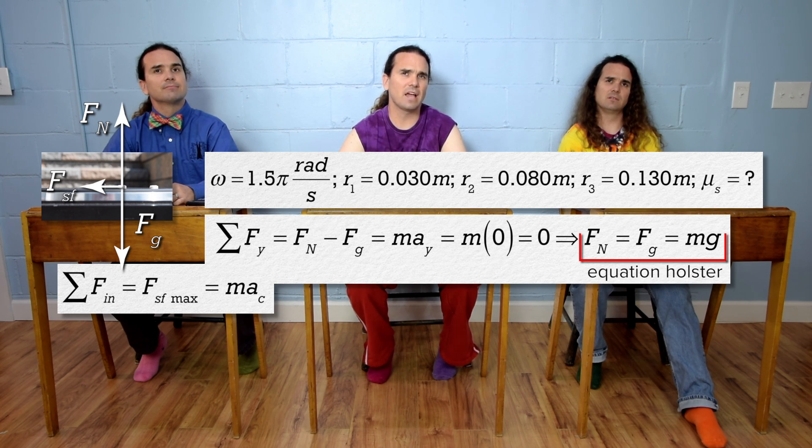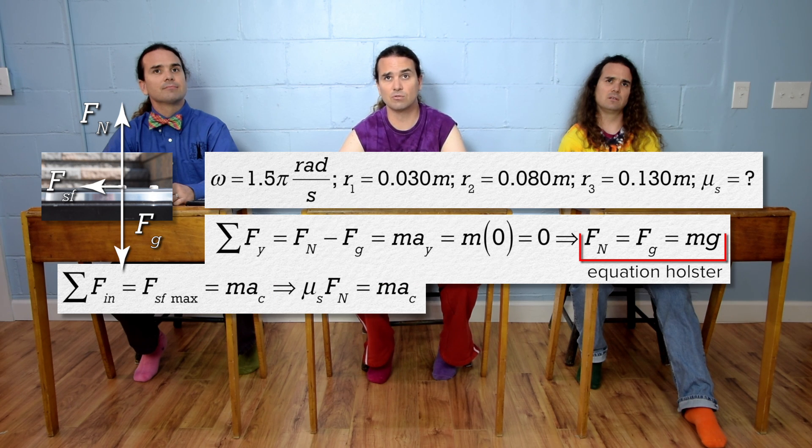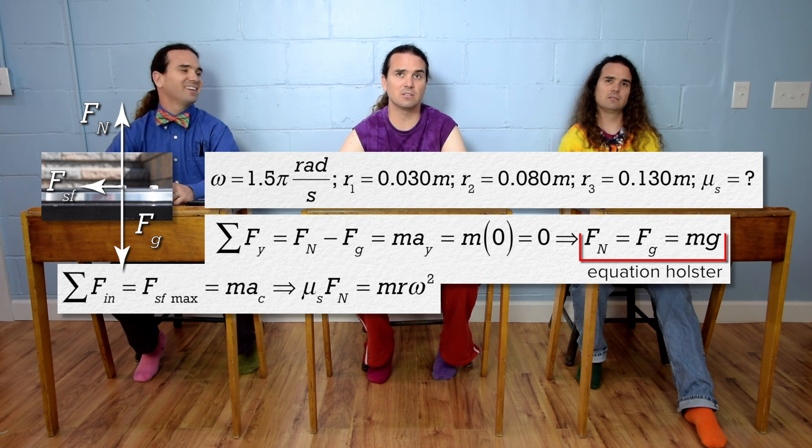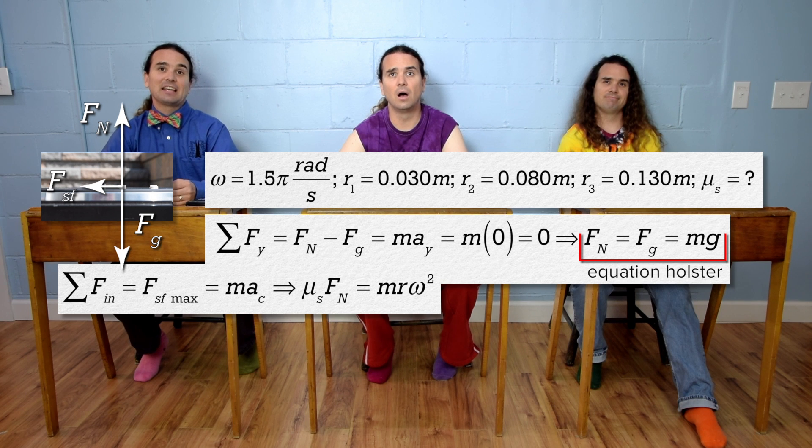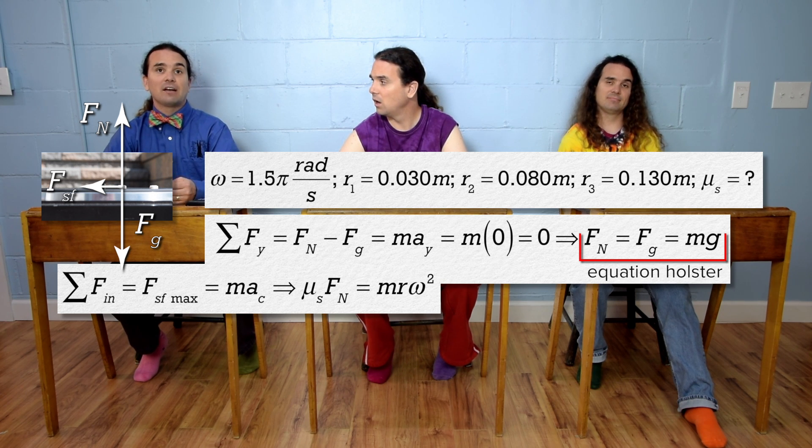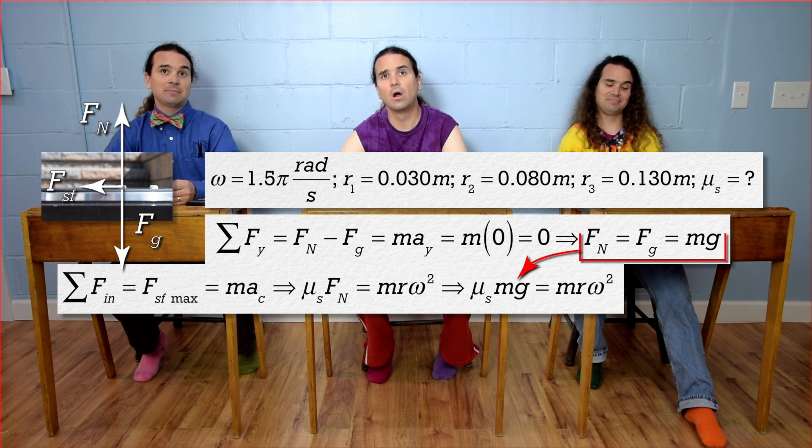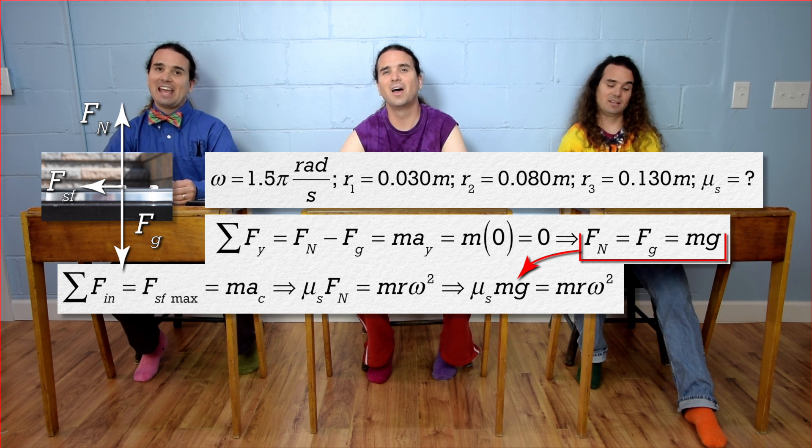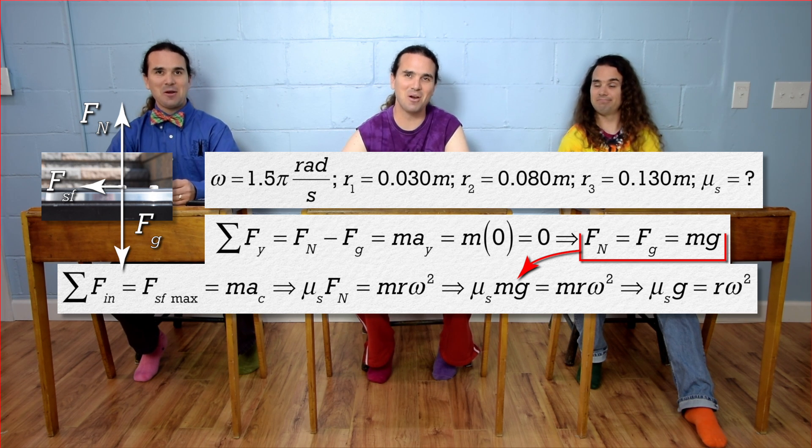Force of static friction equals the coefficient of static friction times force normal, and centripetal acceleration equals radius times angular velocity squared. And we can plug in, from our equation holster, force normal equals mass times acceleration due to gravity. And then, everybody brought mass to the party! Yep.